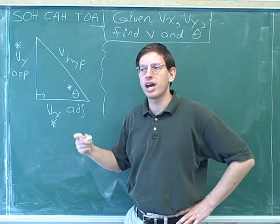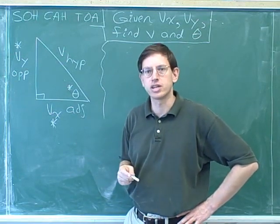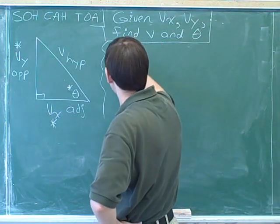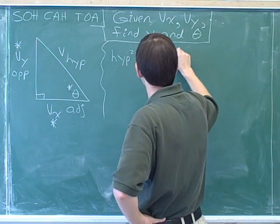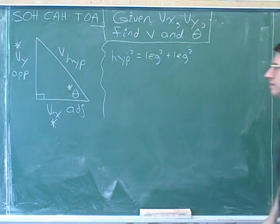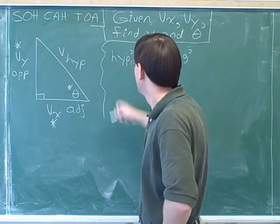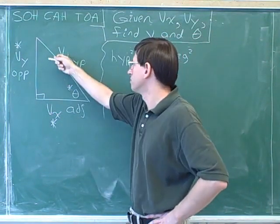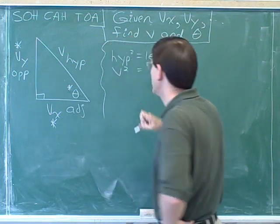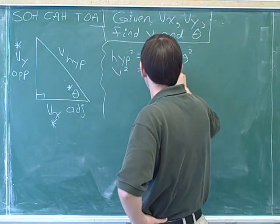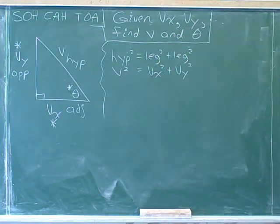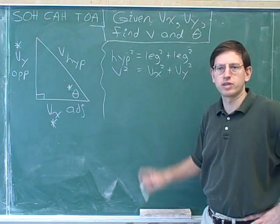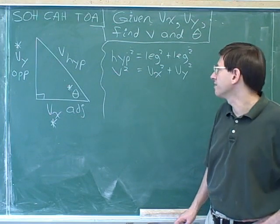If you're given two sides, you don't need trig functions to find the third side — you can just use the Pythagorean theorem. Let's write the general formula first: hypotenuse squared equals leg squared plus leg squared. The hypotenuse uses the symbol v, one leg uses the symbol v sub x, and the other leg uses the symbol v sub y. So v squared equals v sub x squared plus v sub y squared. We're trying to solve for v.